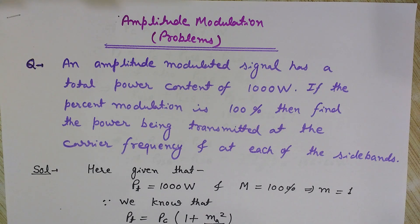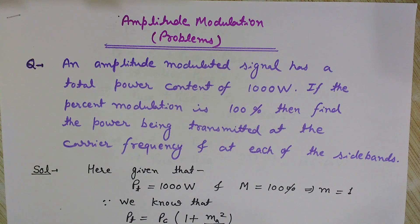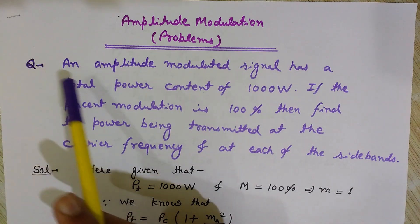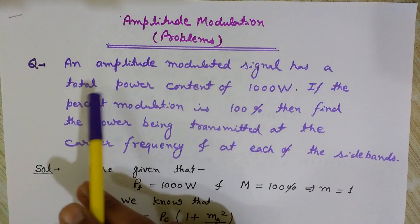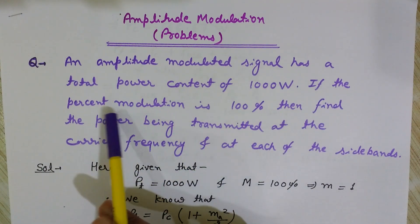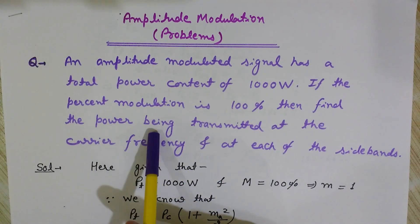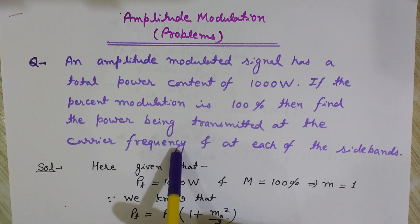Hi, this is Lalith Vasis and you are watching Engineering Made Easy. We will solve a problem based on amplitude modulation. The problem is: an amplitude modulated signal has a total power content of 1000 watts. If the percent modulation is 100%, find the power being transmitted at the carrier frequency and at each of the sidebands.